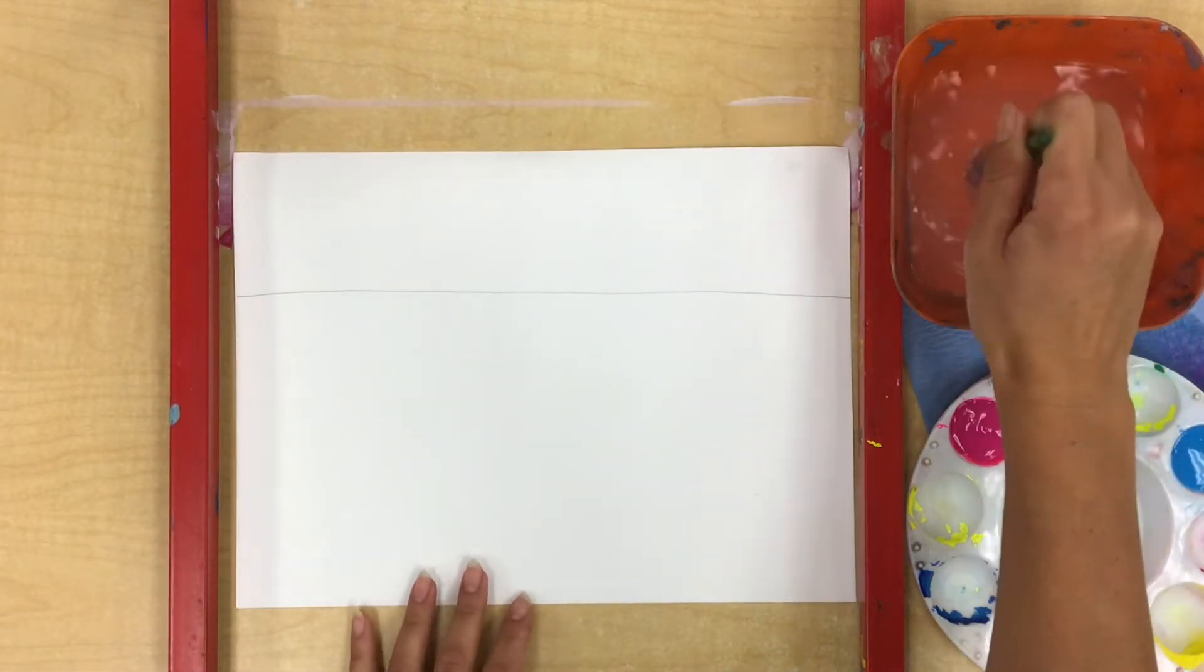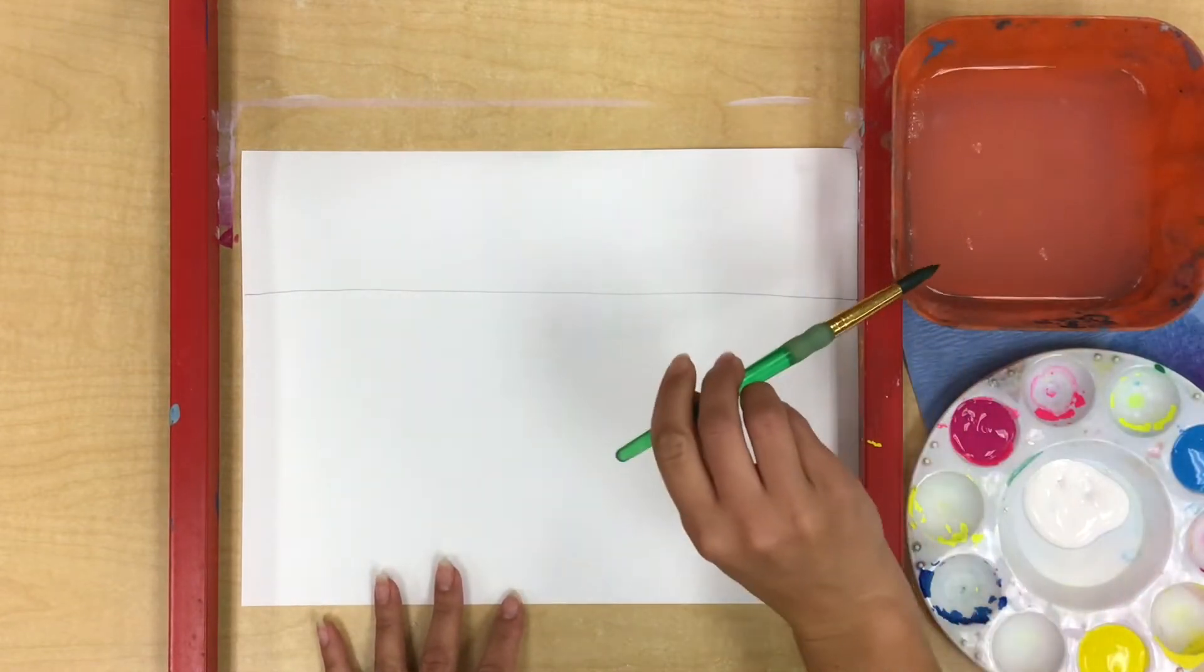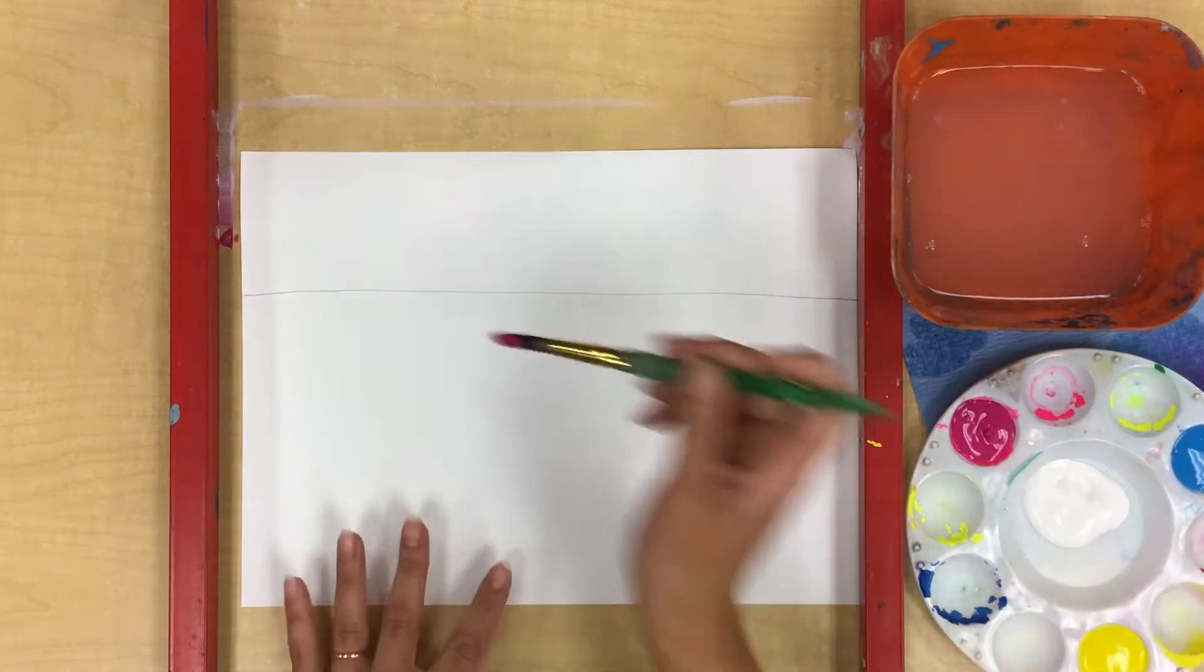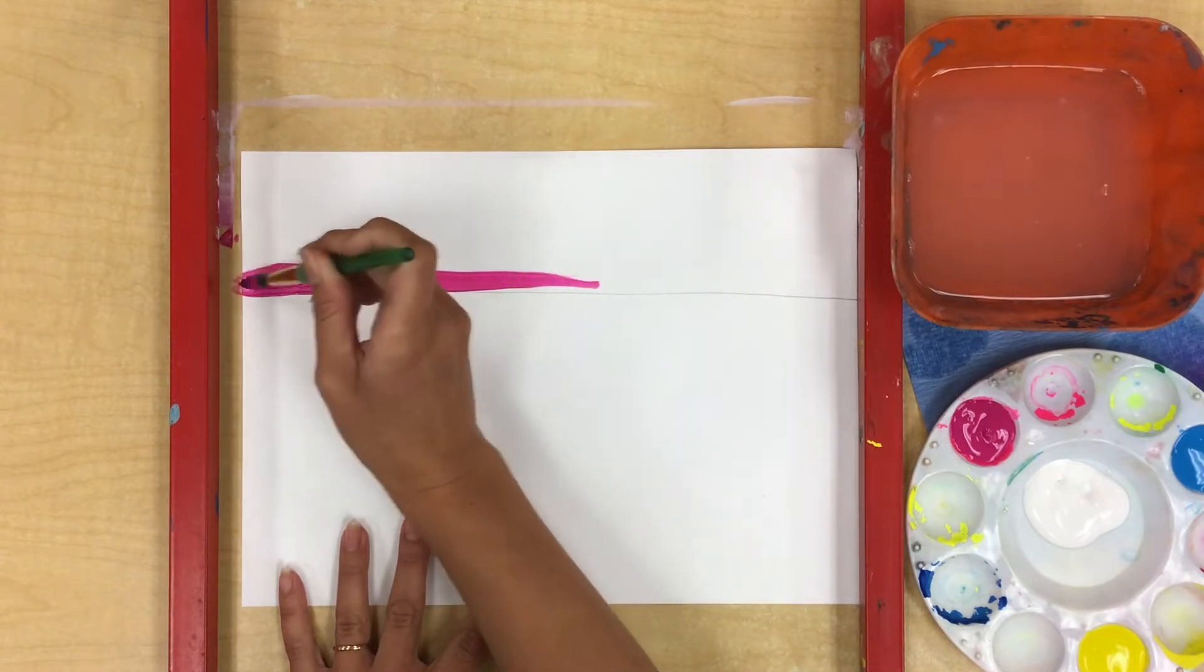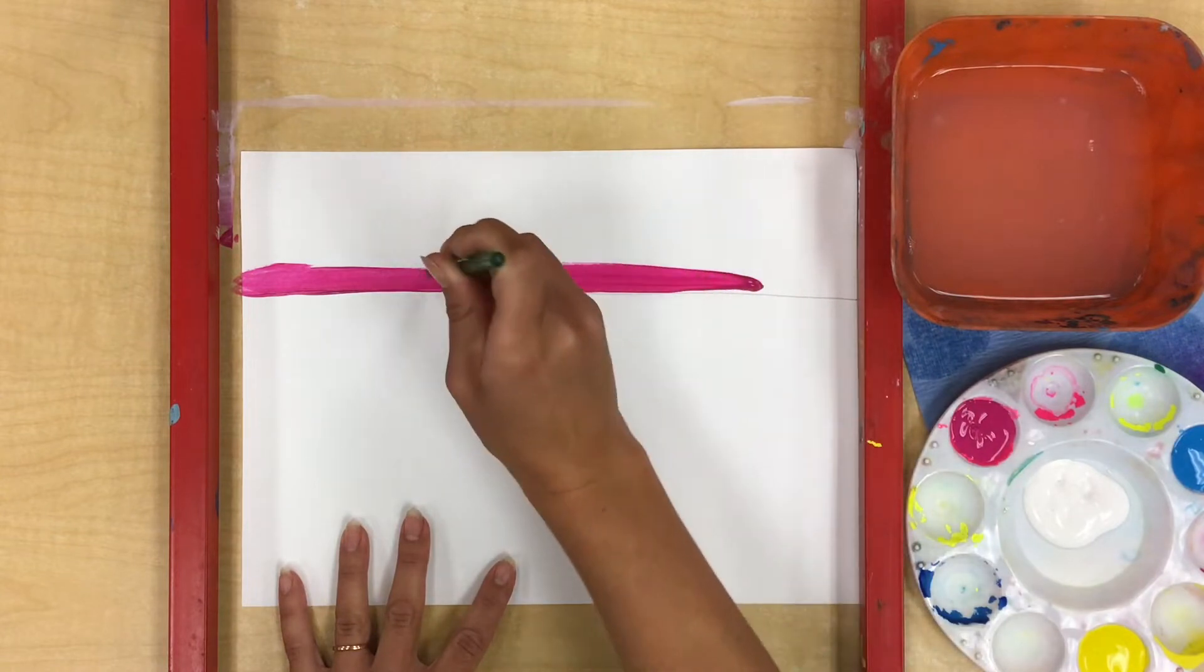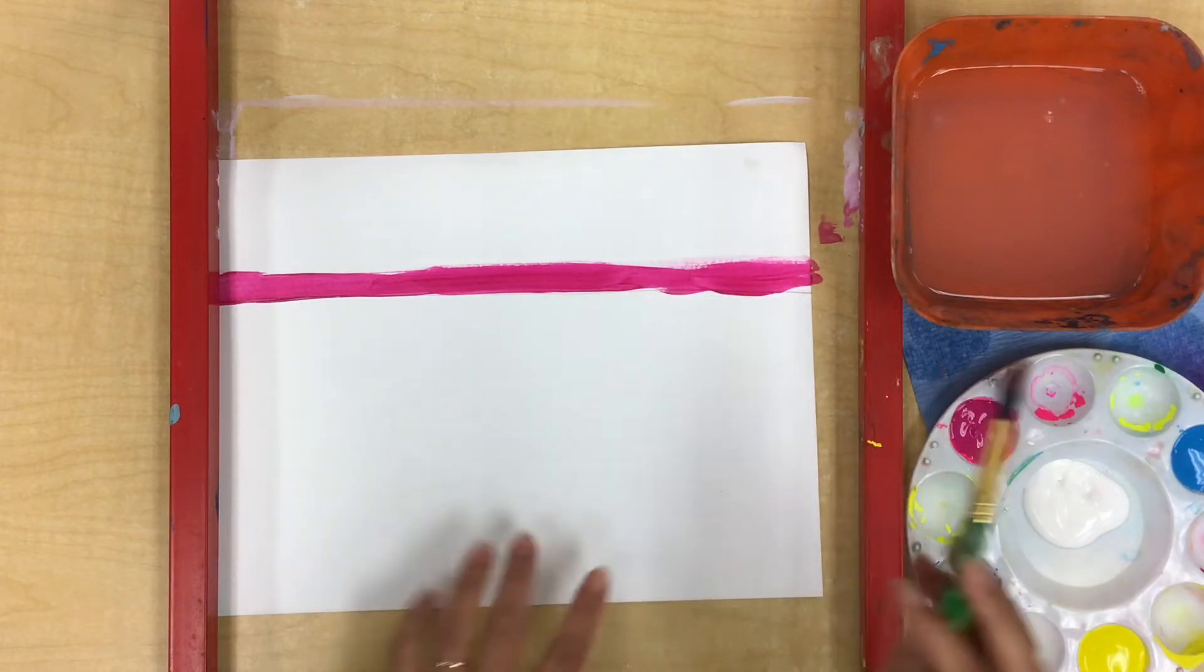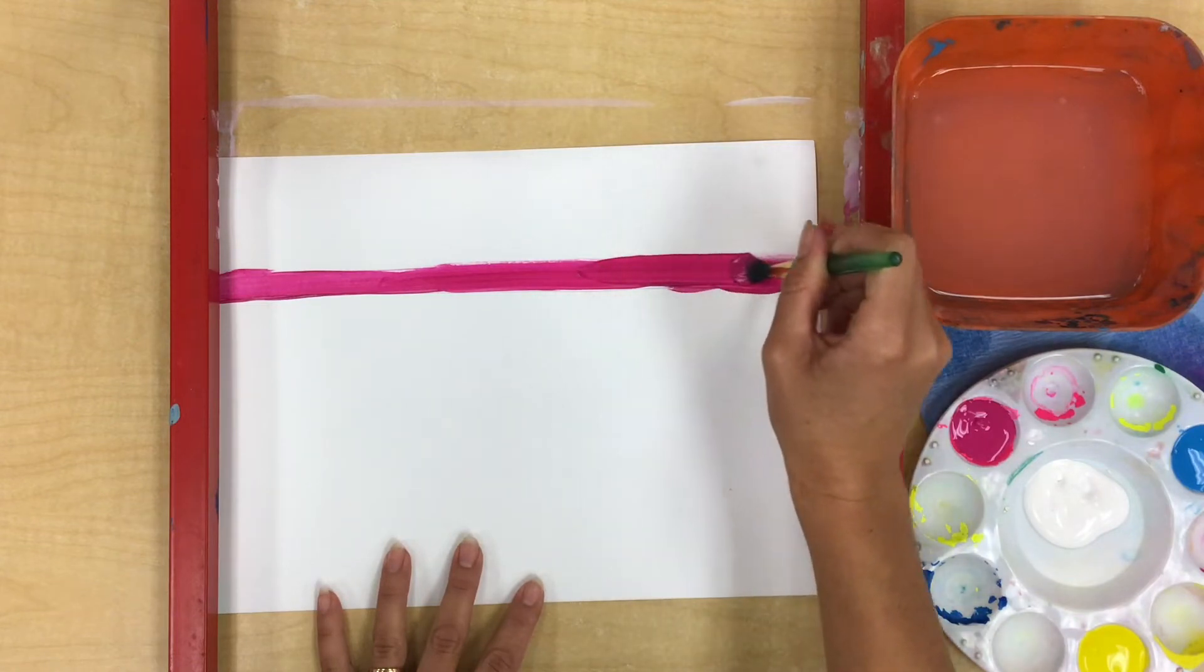So I'm going to start by cleaning my brush because you never know who had it before you. Wipe off the extra water on the edge and then dry it off on your towel. Now I'm going to get just some plain pink and very gently I'm going to start my first stripe on the very edge of my horizon line.